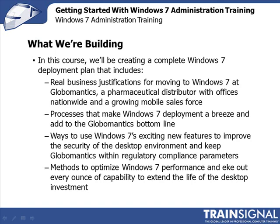In this course, you and I together will be creating a complete Windows 7 deployment and implementation plan. This plan will have a lot of components to it, starting with real business justifications. Globomantics, the pharmaceutical distributor with nationwide offices that we'll be using as a scenario in this course, isn't just going to buy Windows 7 because it happens to have been released by Microsoft. The company is going to want to see real business benefit that adds to the bottom line in order to move to this newest Windows iteration.